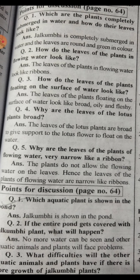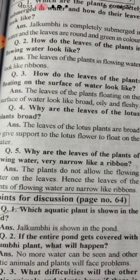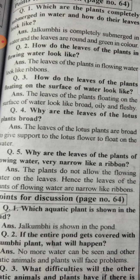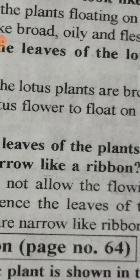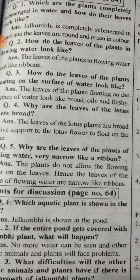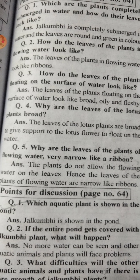Why are the leaves of the lotus plant broad? The lotus flower is broad. Why are the leaves of plants in flowing water very narrow like a ribbon? So they can float easily with the current. The aquatic plant is in the pond. The aquatic plants in the pond, lake, and river are different.